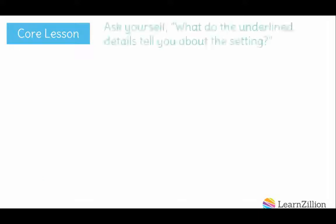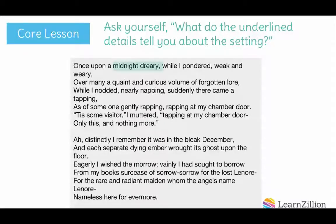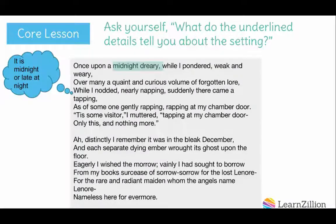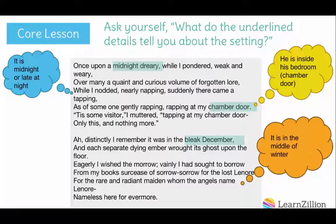Next, ask yourself: what do the underlined details tell you about the setting? 'Midnight dreary' tells me that it is midnight or late at night. 'Chamber door' indicates a bedroom, so the narrator is inside his bedroom. 'Bleak December' tells us it is the middle of winter. And 'books' tells us that there are books in his bedroom, possibly suggesting a library.